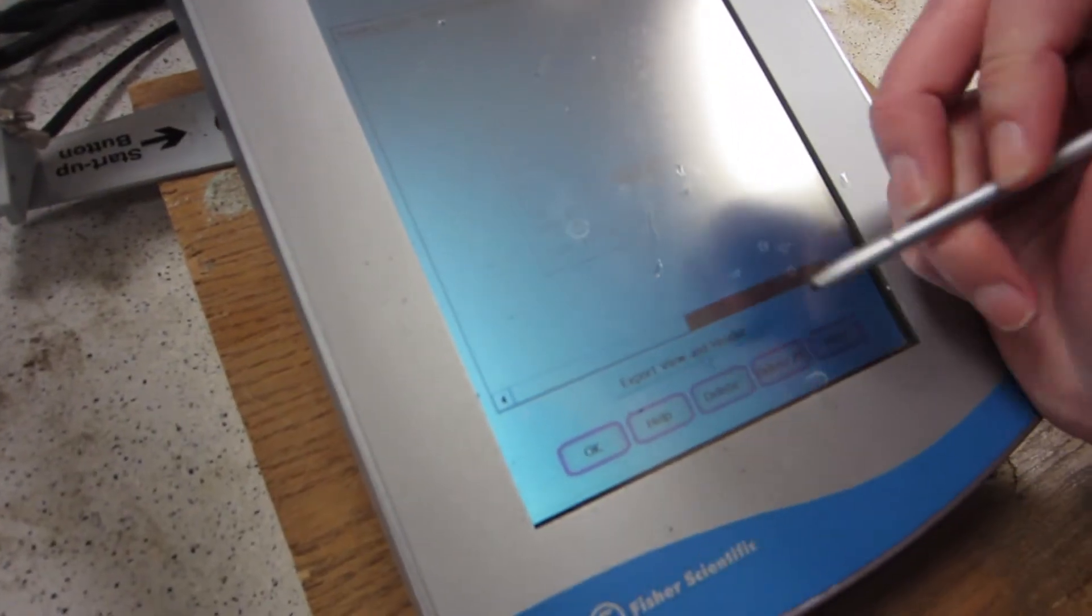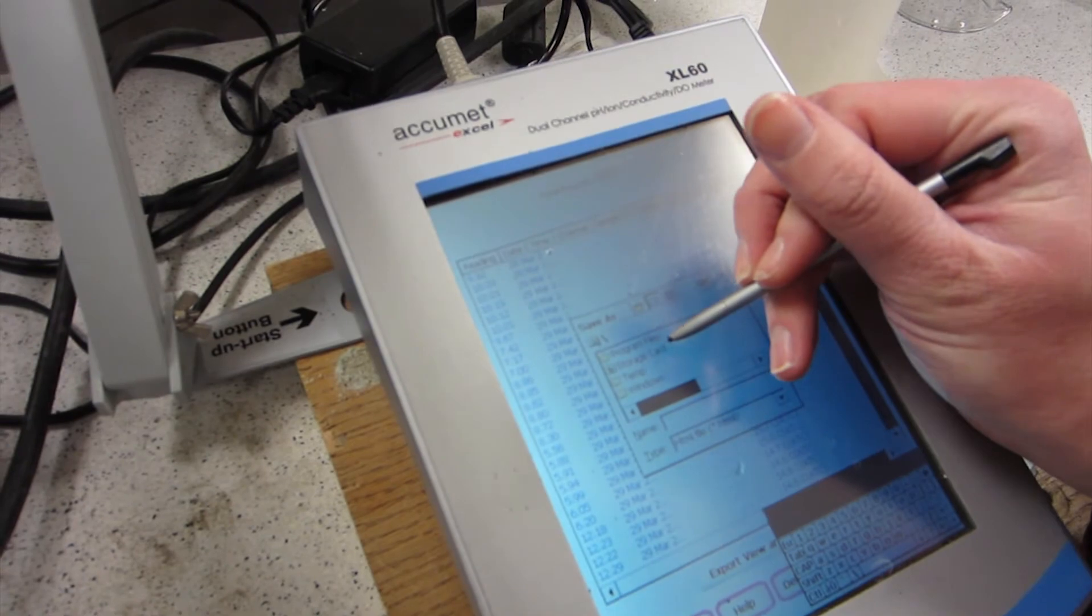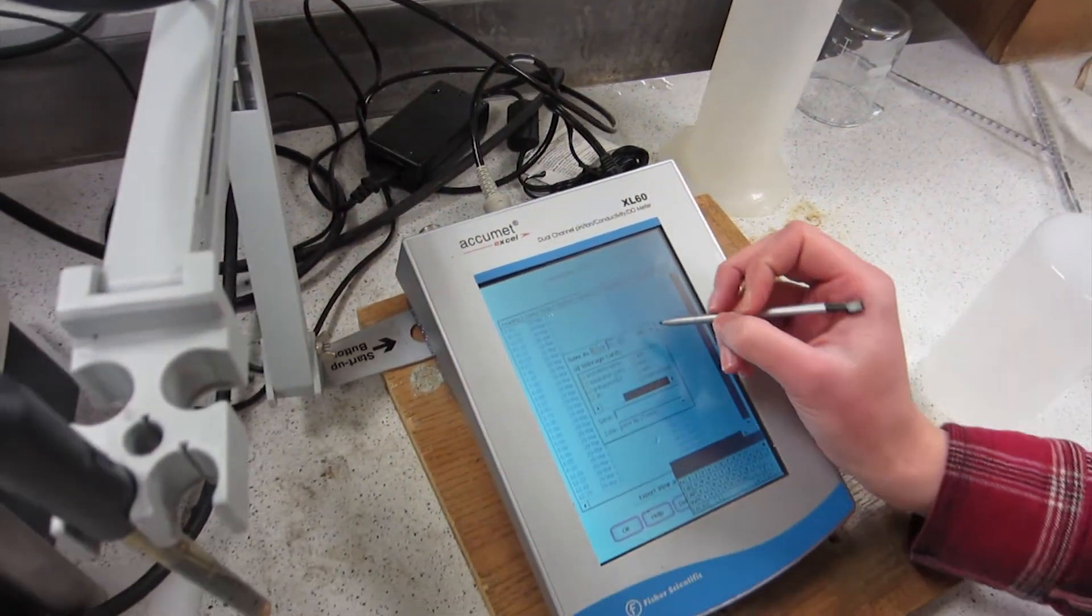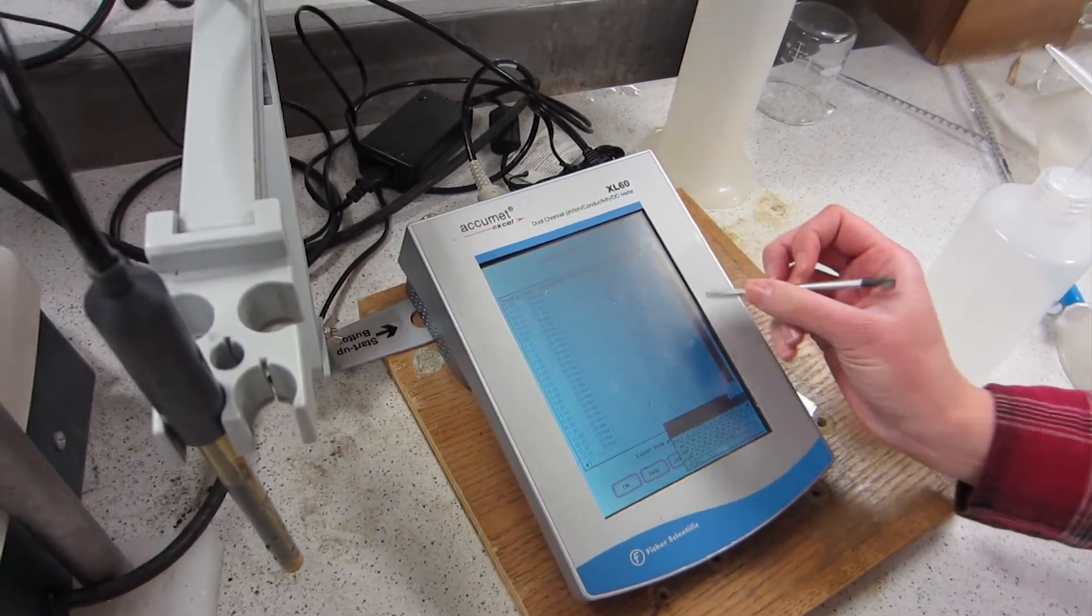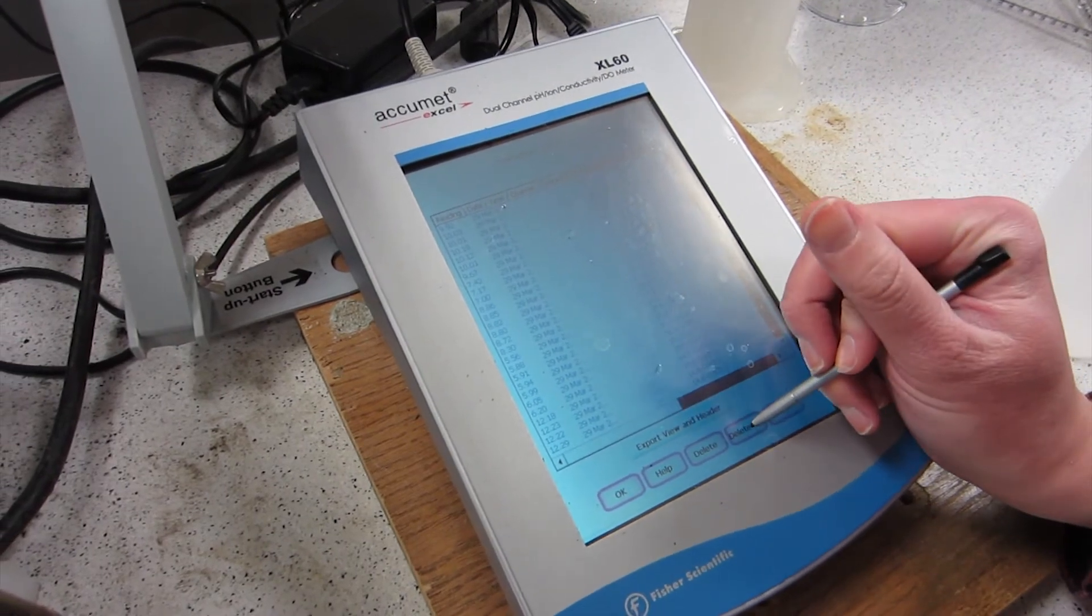You're going to go to export view and header. This will pull up these different files. You're going to hit storage card. Then you're going to save it in your specified file that you make on this storage card back here. So you're going to hit OK, and that will save it there. Then you're going to want to delete the data file, so when you take another data point, it's completely clear.